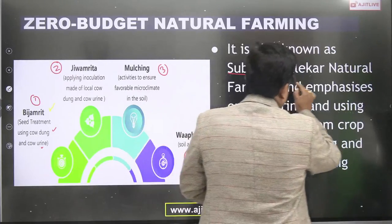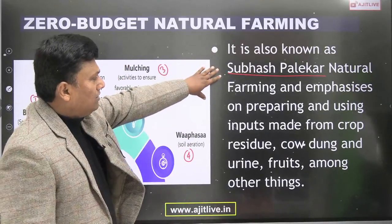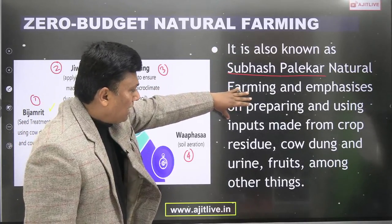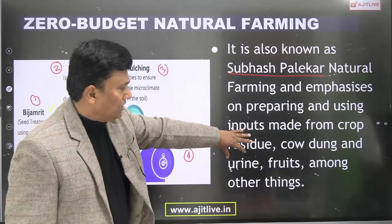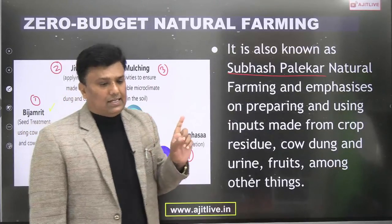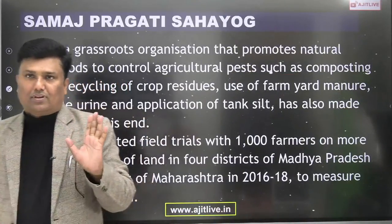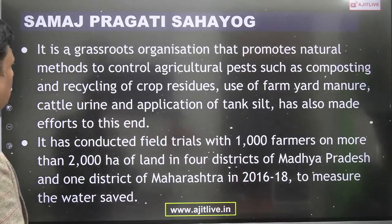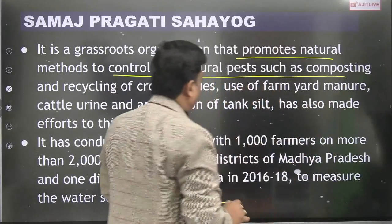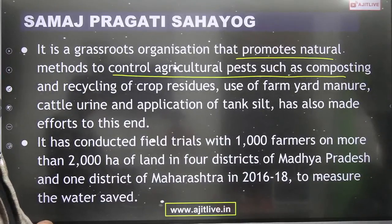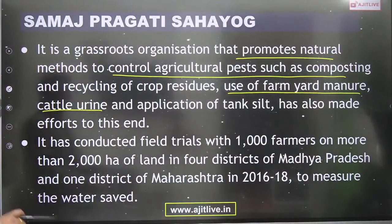Subhash Palekar's natural farming emphasizes preparing and using inputs made from crop residue, cow dung, cow urine in beeja amrita, jeeva amrita, mulching, and fruits among other things. He showed that one desi cow can meet the demand of one hectare of land. Samaj Pragati Sahayog is a grass-root organization that promotes natural methods to control agricultural pests such as composting, recycling of crop residues, use of farm yard manure, and cattle urine. They have done good work in some districts of Madhya Pradesh.